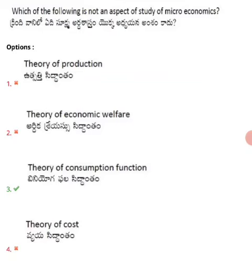Which of the following is not an aspect of study of microeconomics? That means, which of these four options does not come under microeconomics? Let us look at the four options.